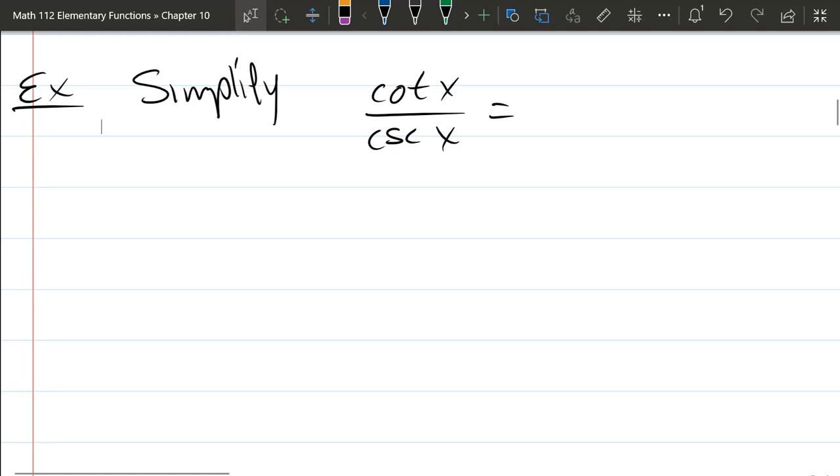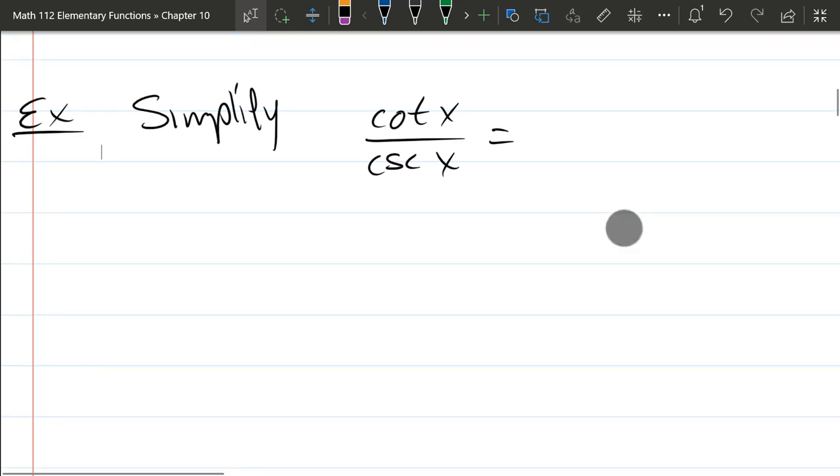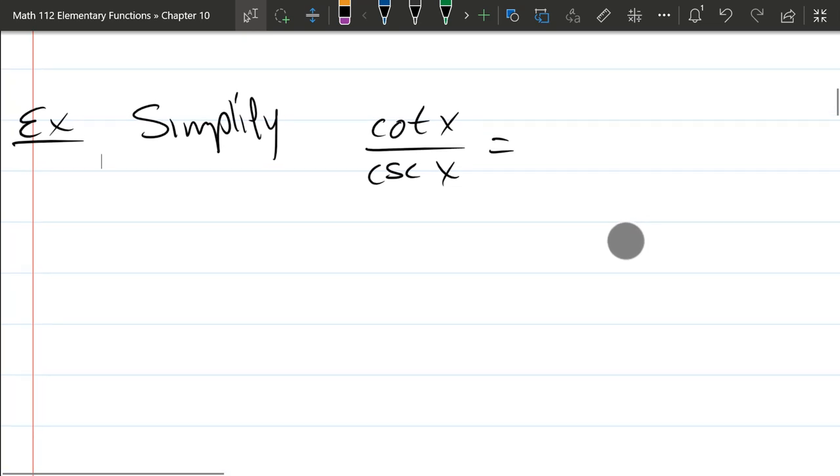Our first simplified example, we're starting with a cotangent and a cosecant. And the first thing we need to do is rewrite these in terms of sines and cosines.